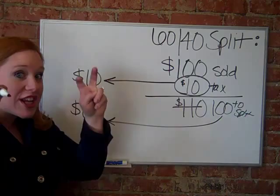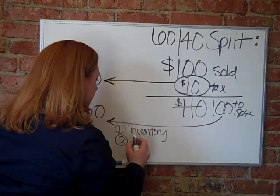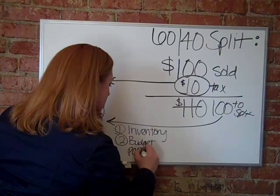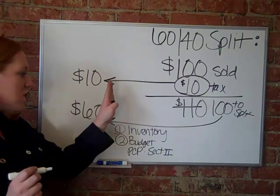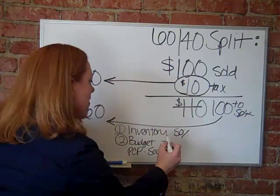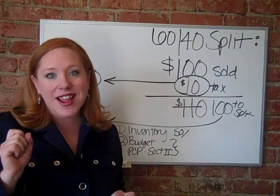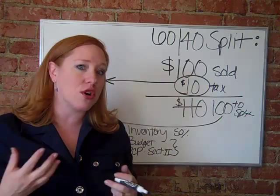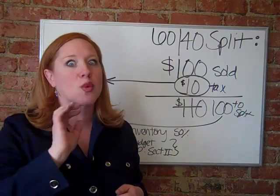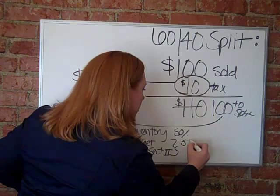That $60 gets budgeted for two things. First, it goes to replace my inventory — that's 50%. And then it is recommended that you not spend any more than 5% of what you sell in your business on Section 2. Those are little things like applicators, samples of eyeshadows, and samples of lipsticks — that's all called Section 2 in your Mary Kay business. You really shouldn't spend more than 5% of your total sales in a month on those samples. It's really easy and tempting to spend a lot more than that, so be a savvy businesswoman and keep that right at or under 5%.